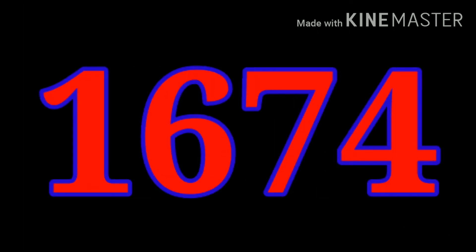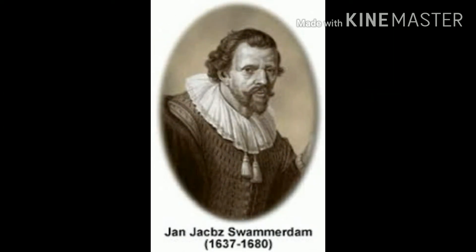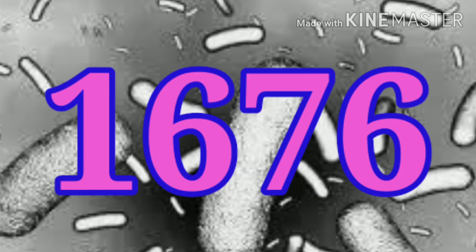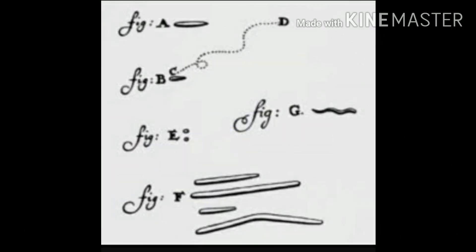In 1674, Leeuwenhoek examined red blood cells, which had been discovered six years earlier by his fellow Dutchman, Jan Swammerdam. With a superior lens, Leeuwenhoek was able to give a clearer description of the cells than ever before and was the first person to determine their size accurately. In 1676, Leeuwenhoek discovered bacteria in water — the first bacteria observed by man. He estimated that it could take more than 10,000 of them to fill the volume of a small grain of sand. His letter announcing this discovery caused widespread doubt at the Royal Society, but Robert Hooke later repeated the experiment and was able to confirm his discoveries.